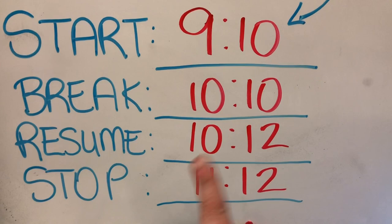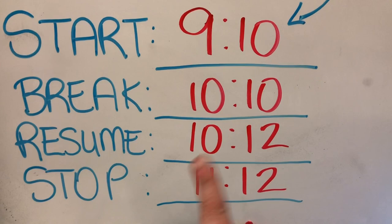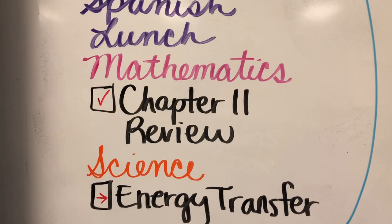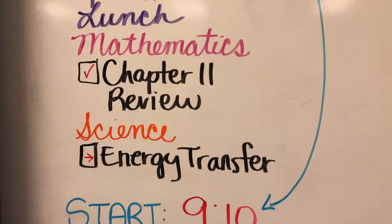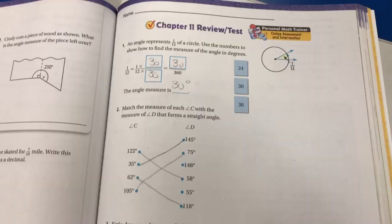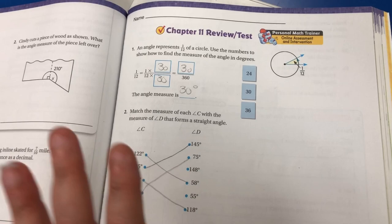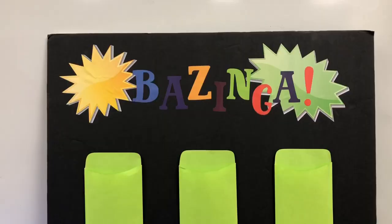After lunch, we went over the chapter 11 review test and the students were having such a great time. I ended up moving science for tomorrow because in order to do the chapter 11 review test, I had the students open their math books to the chapter review test — but we did this in a fun way, not a boring way. I randomly called on different teams and different members in the teams to answer each question, and if they got the questions correct, they got to pull a card from this Bazinga board.